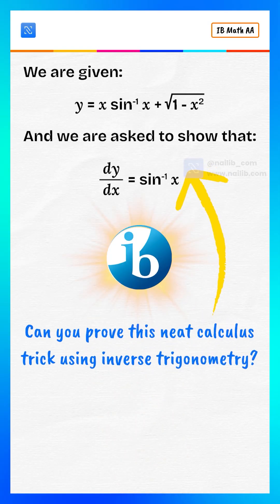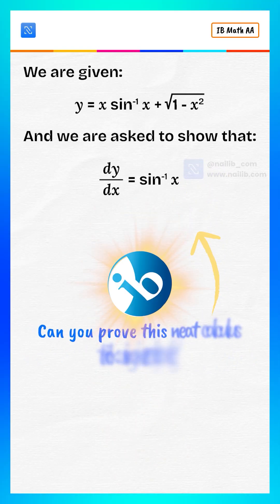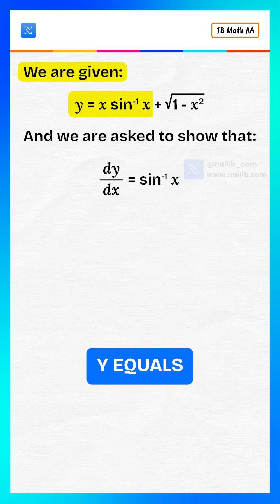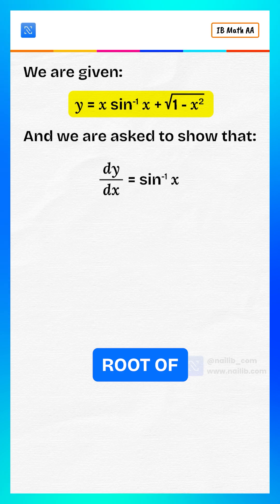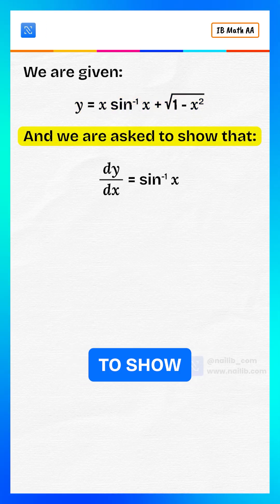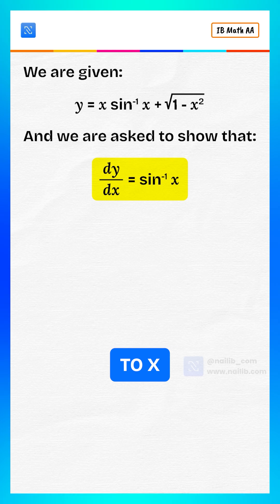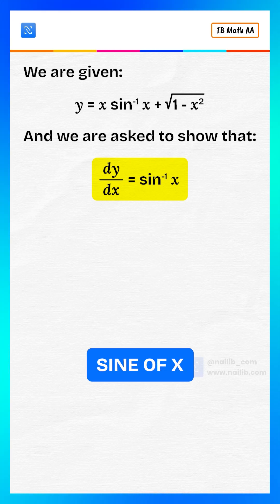Can you prove this neat calculus trick using inverse trigonometry? Let's go! We are given y equals x multiply inverse sine of x plus square root of 1 minus x squared. We are asked to show that the derivative of y with respect to x equals inverse sine of x.